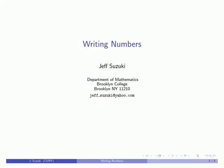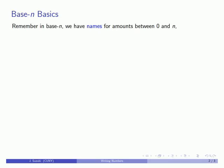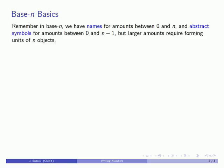So let's try and write some numbers in other bases. The thing to remember is that in base-n we have names for amounts between 0 and n, and we also have abstract symbols for amounts between 0 and n-1. But if we have larger amounts, what we're going to have to do is form these into units consisting of n objects apiece. And then when we write our number, we're going to record how many of which units. And the key thing to remember here always is that arithmetic is bookkeeping.